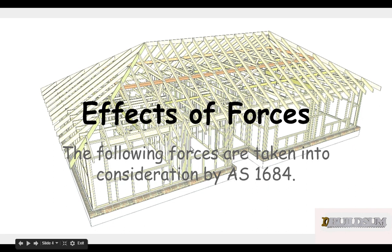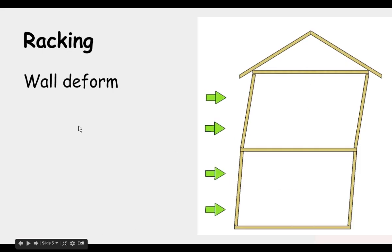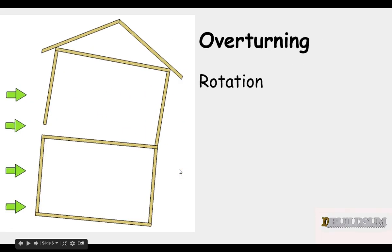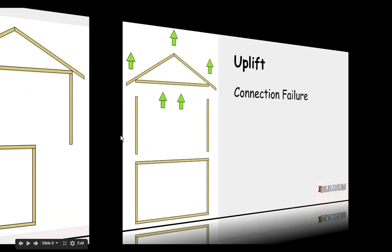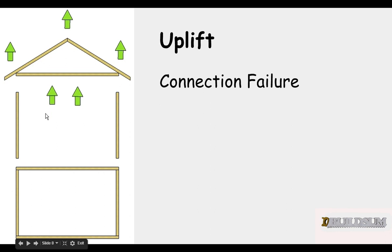So the effects that these forces can have on the building. Obviously if a force acts on the side of the building it can try and rack or deform the walls. If the base is anchored well enough, but the walls just push over. If the base isn't anchored well enough we can get overturning or rotation of the walls. That's real bad, we could get sliding, things just moving across by itself. And worst thing we could get is uplift where everything fails and pieces just start to lift off.